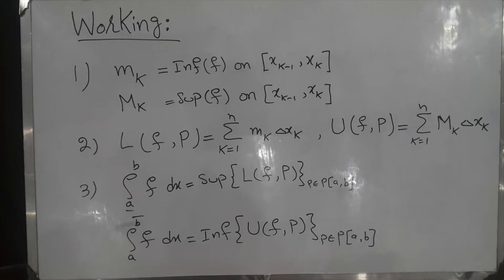First of all, note that m_k (small m_k) is the infimum of the function f on the k-th interval, and M_k (capital M_k) is the supremum of f on the k-th interval.